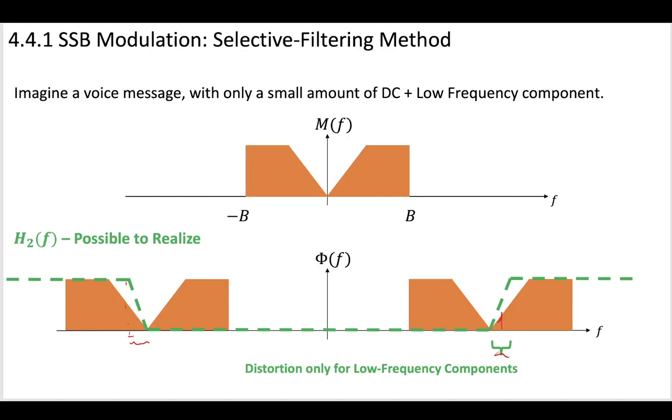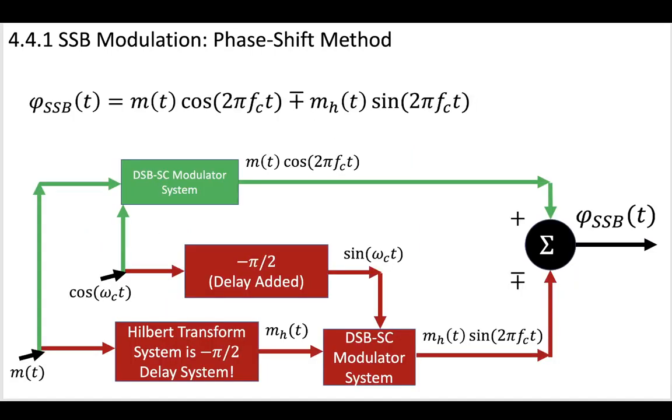I've sort of drawn this here. It made the magnitude a little bit lower. So if you have some distortion in the lowest frequency components of a voice baseband message, you can probably use this selective filtering method or this phase shift method, depending on what system you have in place.